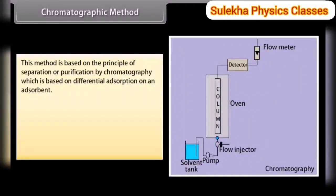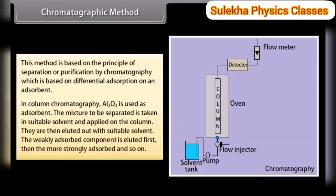Chromatographic method is based on the principle of separation or purification by chromatography, which relies on differential adsorption on an adsorbent. In column chromatography, Al₂O₃ is used as adsorbent. The mixture to be separated is taken in a suitable solvent and applied on the column. Components are eluted with a suitable solvent — the weakly adsorbed component is eluted first, then the more strongly adsorbed. This method is suitable for elements available only in minute quantities where impurities are not very different in chemical behavior from the element to be purified.